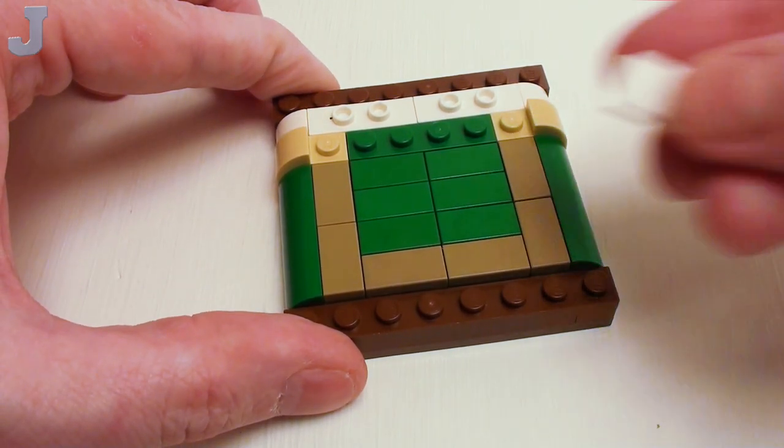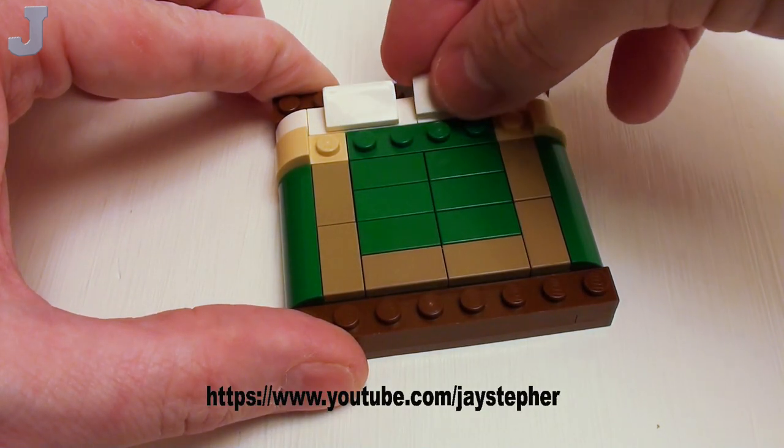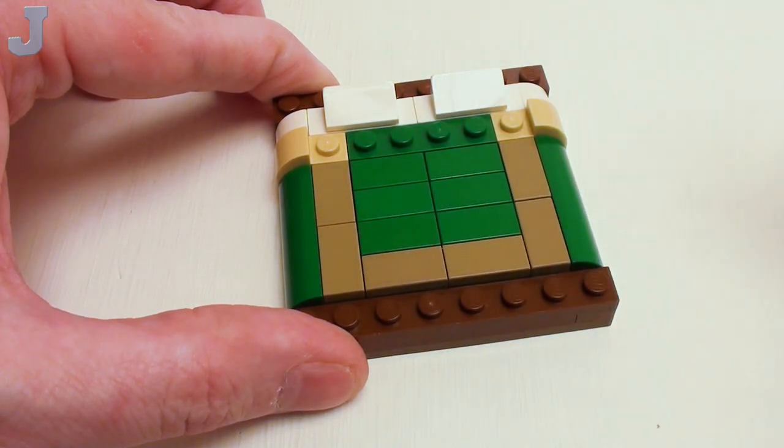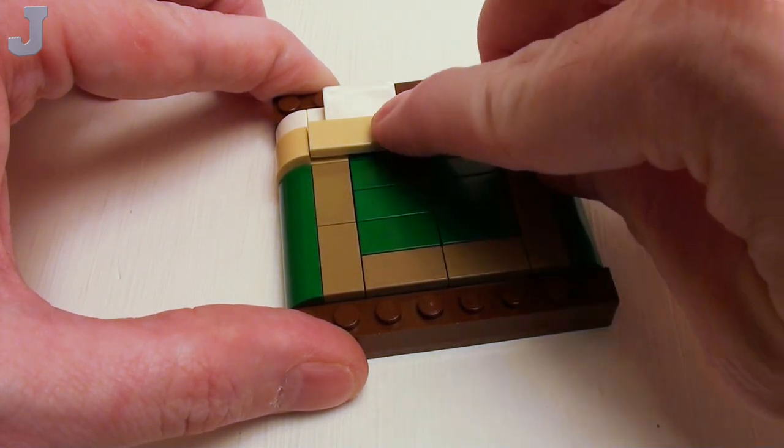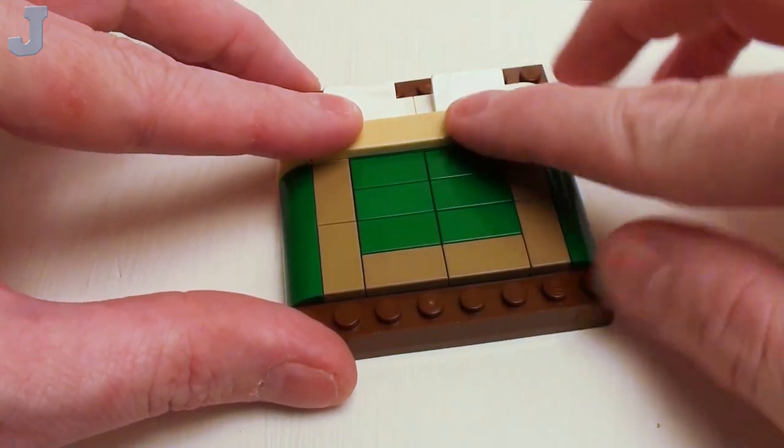And for pillows, a set of 1x2 by 2/3rds slopes. And in this area, a 1x6 flat tile to complete the folded-over comforter.